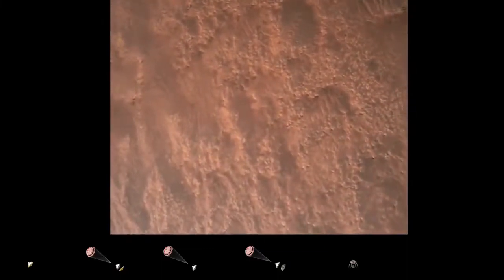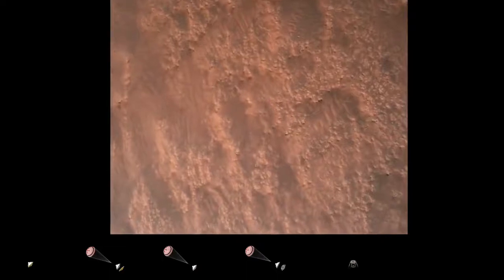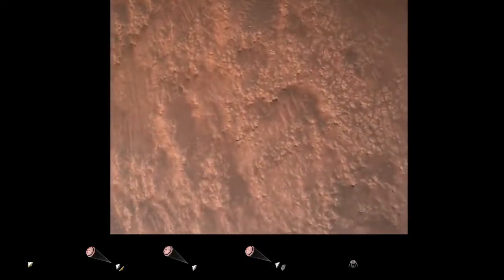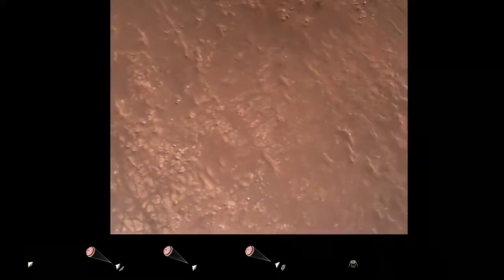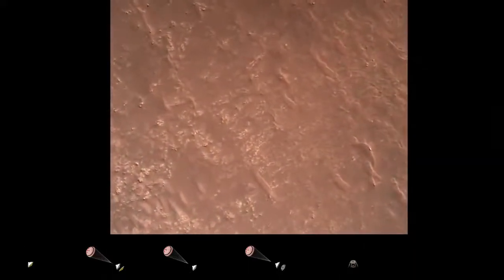Terrain safety, bravo. We have completed our terrain relative navigation. Current speed is about 30 meters per second, altitude of about 300 meters off the surface of Mars.